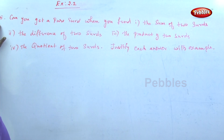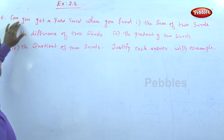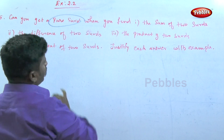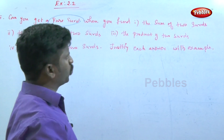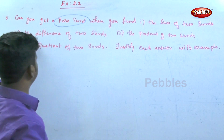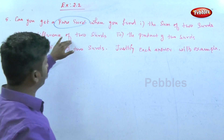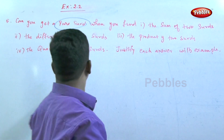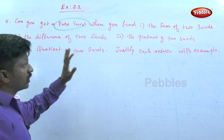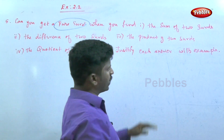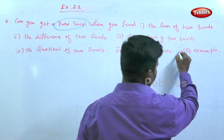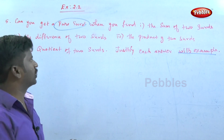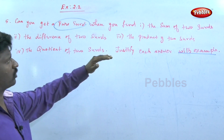The fifth problem: can you get a pure surd when you find the sum of two surds, the difference of two surds, the product of two surds, the quotient of two surds? Justify each answer with an example. There are four points to cover.